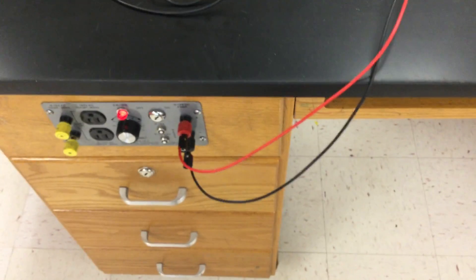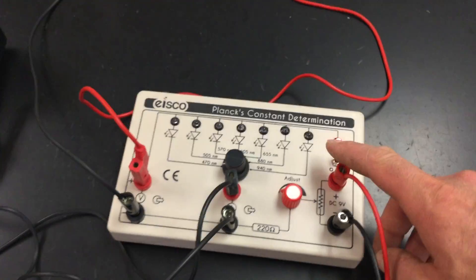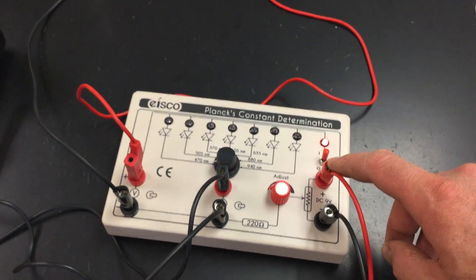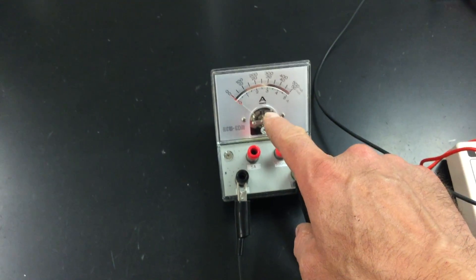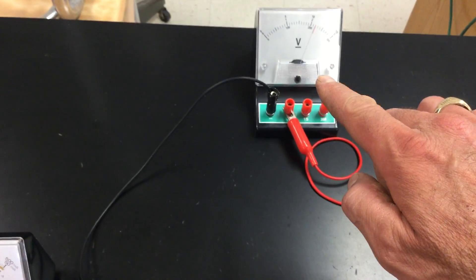First of all we have a power supply, DC power supply, feeding up to here the Planck's constant determination device. We have these two wires connected off to the side to the ammeter so it can read the flow of current in amps and starting from here going up to the top is the voltmeter.